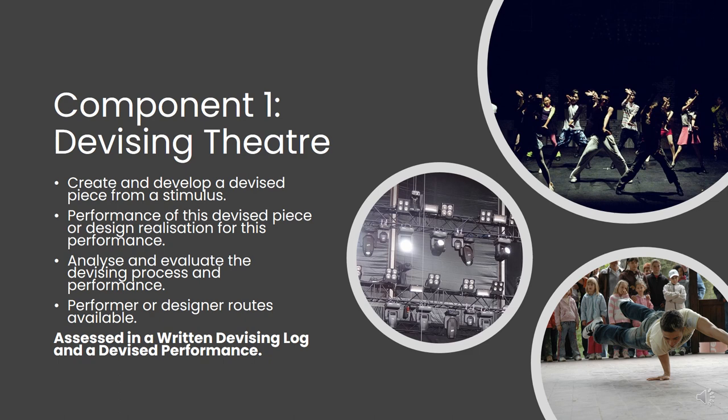Component 1, titled Devising Theatre, asks pupils to create and develop a piece of theatre from a stimulus — a stimulus being a starting point or a piece of inspiration. This could include a piece of artwork, a poem, a song, or even something that you've seen on social media. Pupils will be asked to create a performance based on this stimulus alongside a written devising log where we will analyse and evaluate their rehearsal process and the final performance. The component provides pupils with a choice to explore either performance elements or the design elements of theatre.